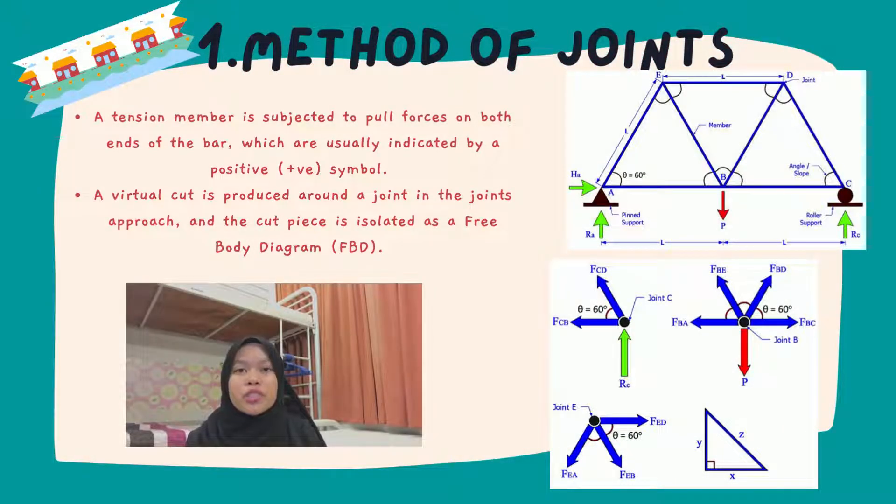Hi, move to the first method of joints for truss analysis. So we assume that all members are either in tension or compression. A tension member is subjected to pull forces on both ends of the bar, which are easily indicated by a positive symbol. When a member is pushed at both ends, the bar is considered to be in compression mode and is labeled with a negative symbol.